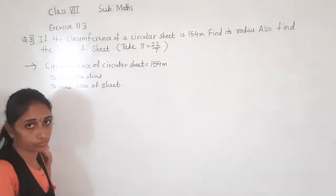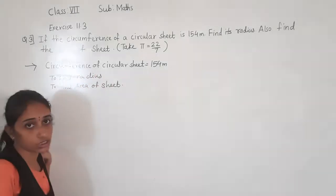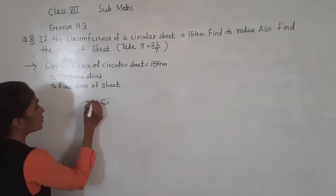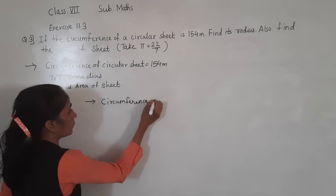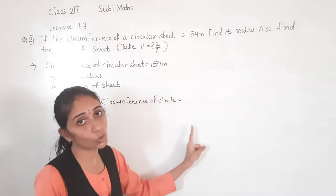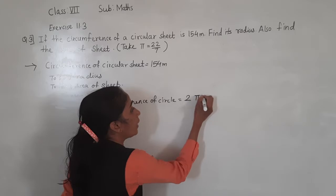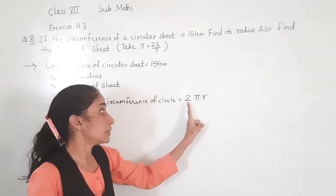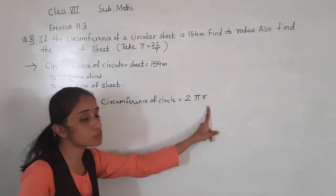Now, circumference of the circular sheet is given. So using the formula for circumference of a circle — what is the formula? It is πD or 2πr. To find the radius, we will use 2πr. Here, diameter equals 2r. So we will use 2πr since we need to find the radius.